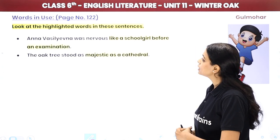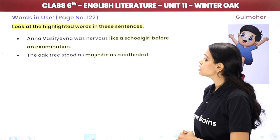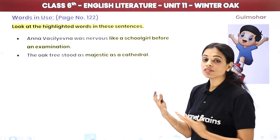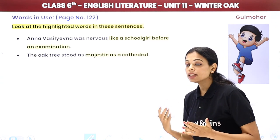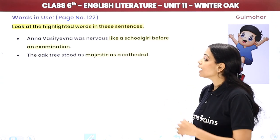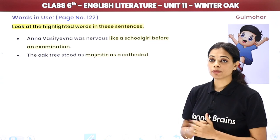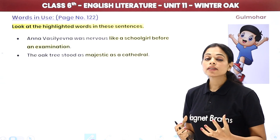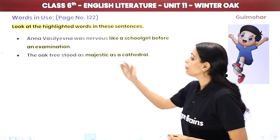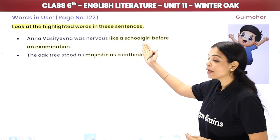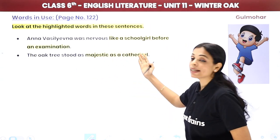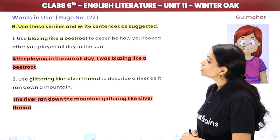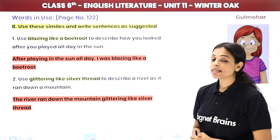Now look at the highlighted words in these sentences involving similes. 'Anna was nervous like a school girl before an examination' — she was as nervous as a school girl. 'The oak tree stood as majestic as a cathedral.' Similes compare two things using the words 'as' or 'like.' Here, Anna is compared to a school girl, and the oak tree is compared to a cathedral.